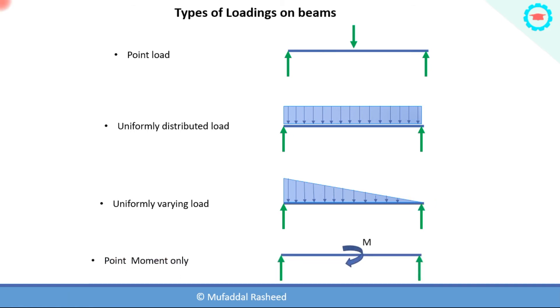The next type of load is called the point moment only, which is basically only the action of a pure moment without any load. Only a moment is acting on the beam, tending to rotate the beam, and there is no load associated with it. This is another type of loading which occurs on beams.